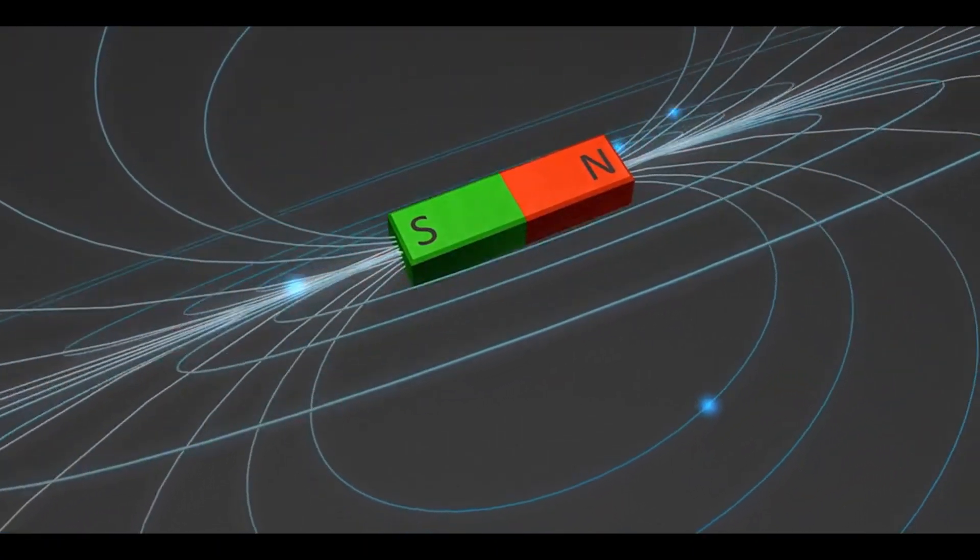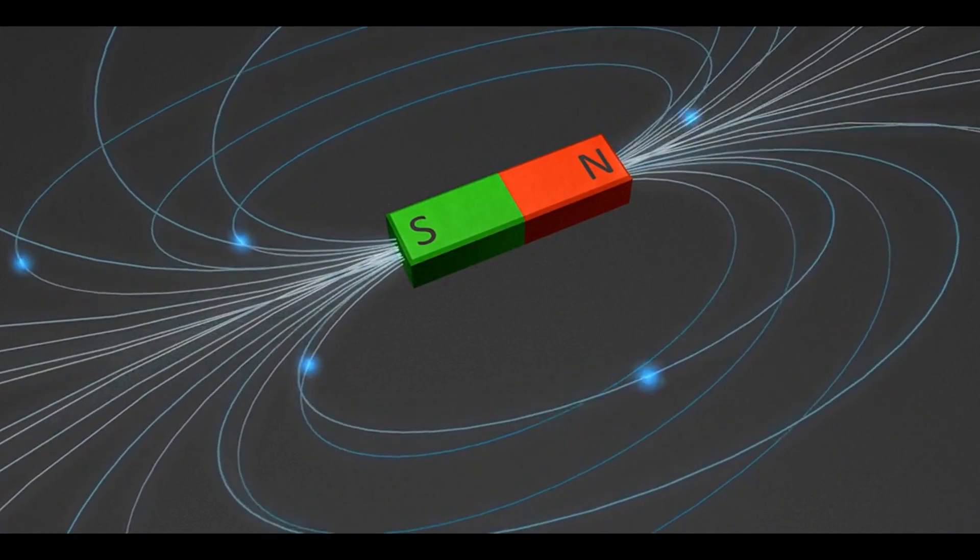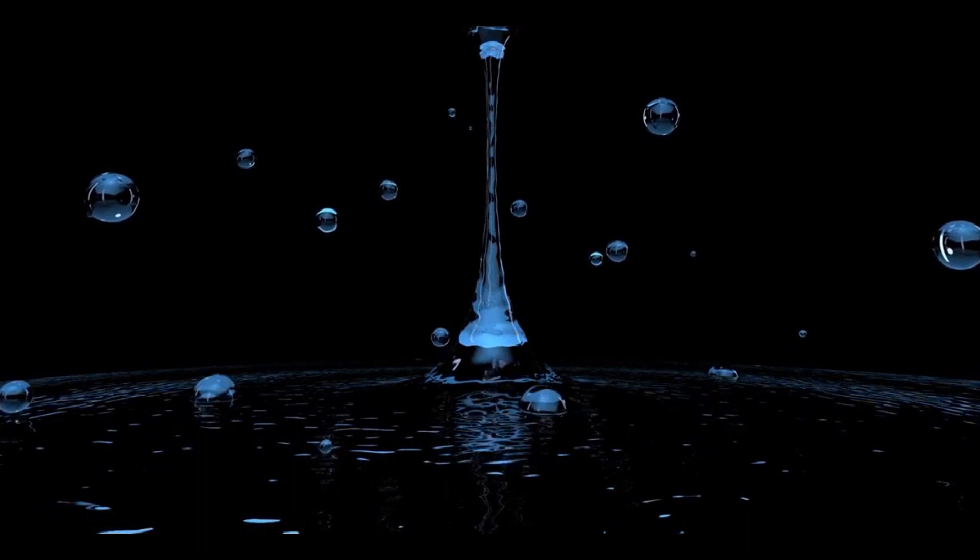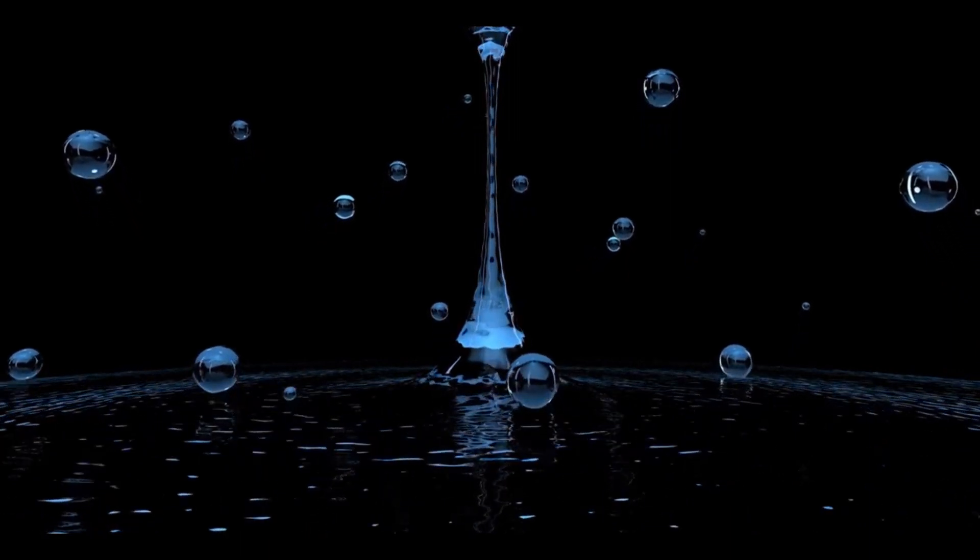Asacusa uses magnetic fields to guide anti-hydrogen atoms into a detector and measure their mass. GBAR uses gravity to drop anti-hydrogen atoms and measure how they fall.